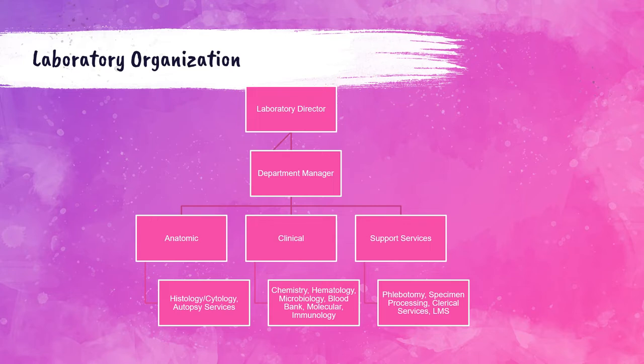Below the department manager we have anatomic pathology, which includes autopsy services as well as histology and cytology departments. The histology and cytology departments evaluate cells and tissues. Then we have clinical pathology, which includes clinical chemistry labs, hematology, coagulation labs, microbiology and parasitology, blood bank, molecular procedures, and immunology.